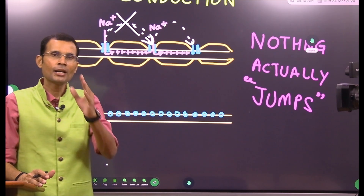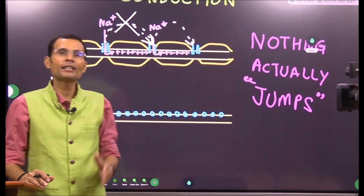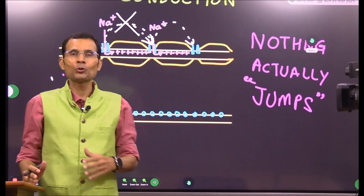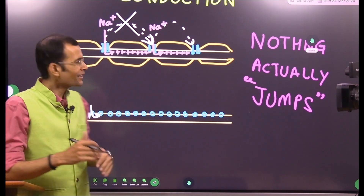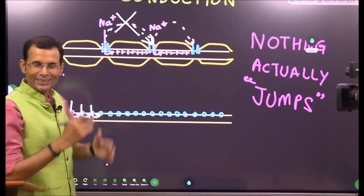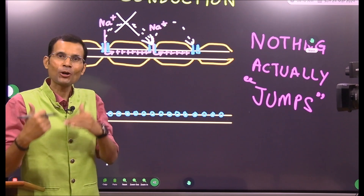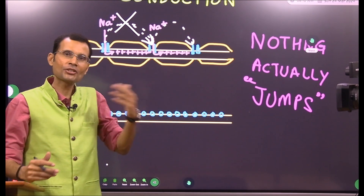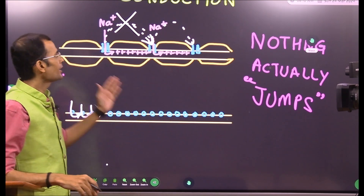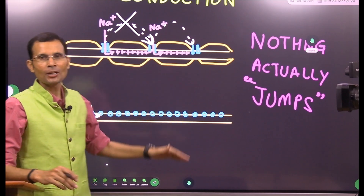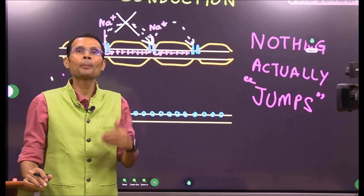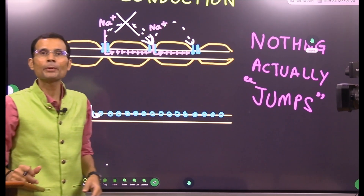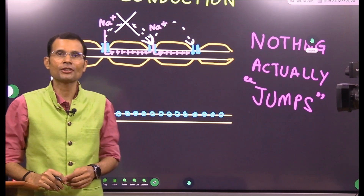In summary: saltus means leap or jump, so literally saltatory means jumping. But in reality nothing is jumping — it's only a perception, because action potentials develop at long distances apart. The mechanism involves electrotonic conduction between nodes and action potentials at the nodes of Ranvier. The advantages are faster conduction speed and less energy expenditure.